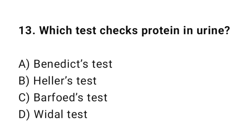Question number thirteen: which test checks protein in urine? The right answer is B — Heller's test. Heller's test detects albumin in urine.